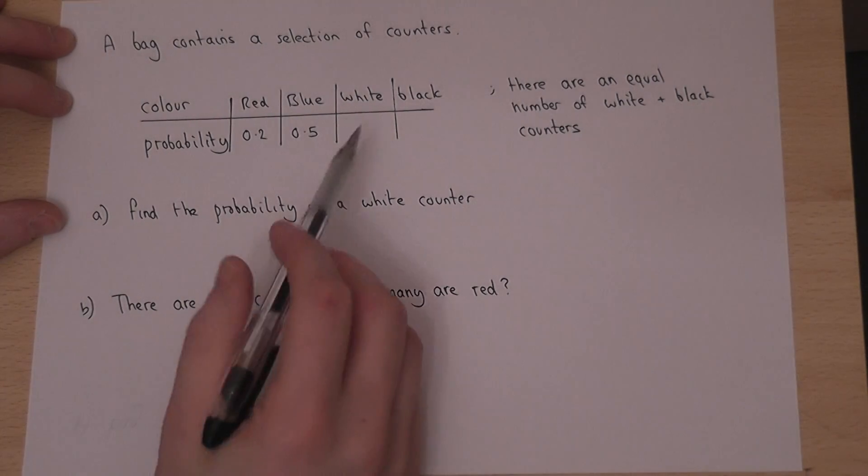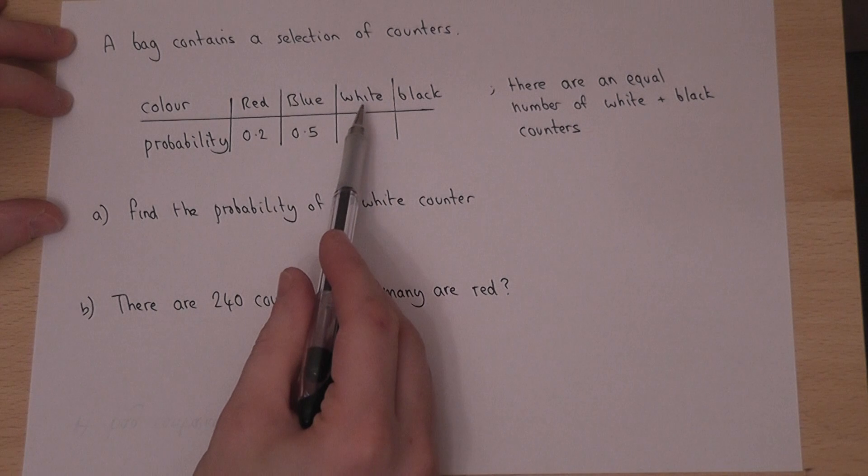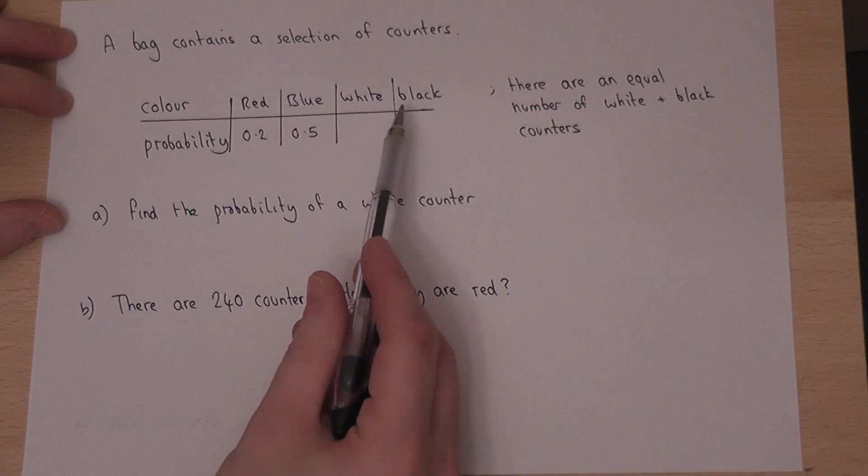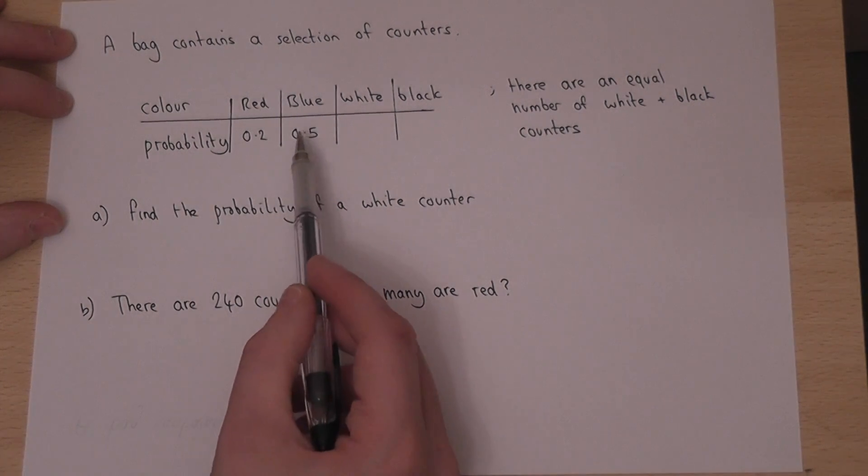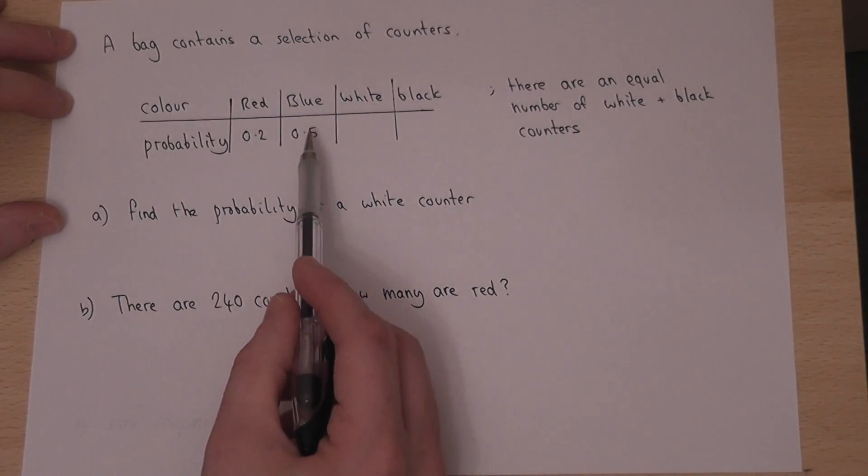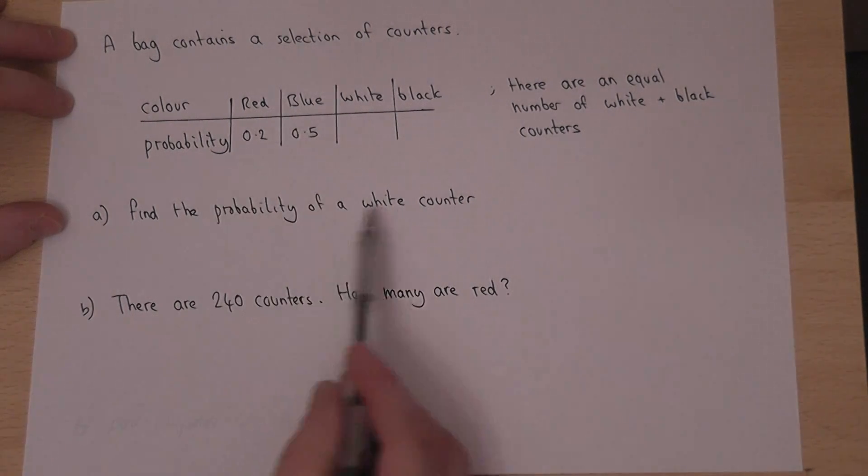In this question we have a bag which contains some red, blue, white and black counters. We're told that the chance of a red counter is 0.2 and the chance of a blue counter is 0.5. The question is, what's the chance of a white counter being pulled out of the bag?